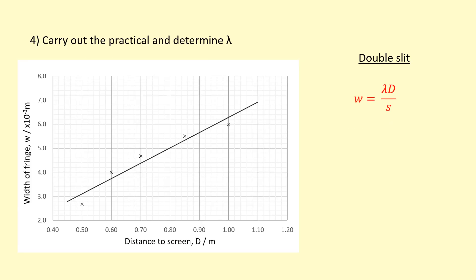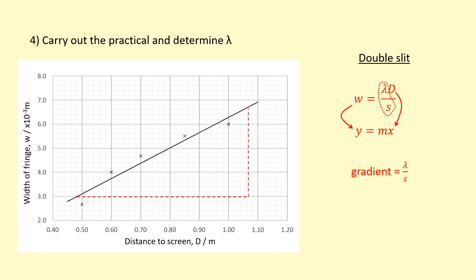To determine the wavelength from the double slit data, use the equation: fringe width = λD/s, where D is the distance to the screen and s is the slit separation. Comparing this to y = mx + c (with no intercept), plot fringe width on the y-axis and distance to screen on the x-axis. The gradient equals λ/s. Calculate the gradient (Δy/Δx) from your graph, then multiply by the slit separation to get the wavelength. Hopefully this matches what was written on the laser, and you can comment on that.